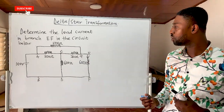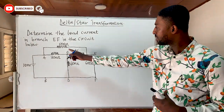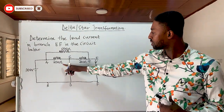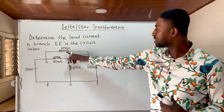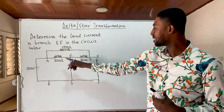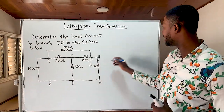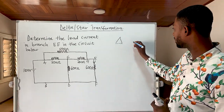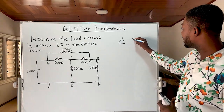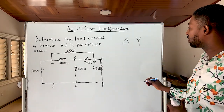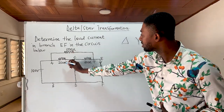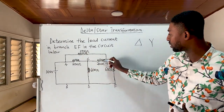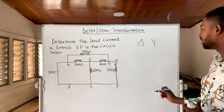Looking at the question, the 500 ohm, 200 ohm, and 200 ohm resistors take the formation of a delta. This is how a delta shape looks, and resistors R1, R2, and R3 are connected in delta.